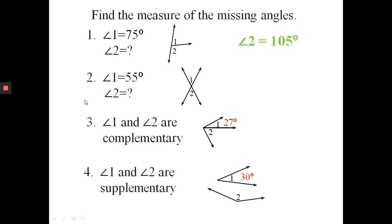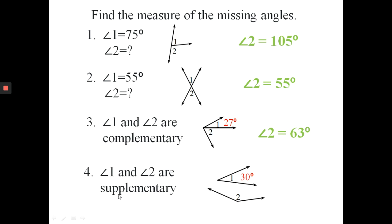Since the measure of angle one is 55 degrees and those two angles are vertical angles, they are congruent, so the measure of angle two is 55 degrees. For number three, angle one and angle two are complementary — angle one is 27 degrees. Complementary angles add up to 90 degrees, so 90 minus 27 gives us 63 degrees. For number four, angle one and angle two are supplementary, adding up to 180 degrees, so if angle one is 30 degrees, angle two is 150 degrees.